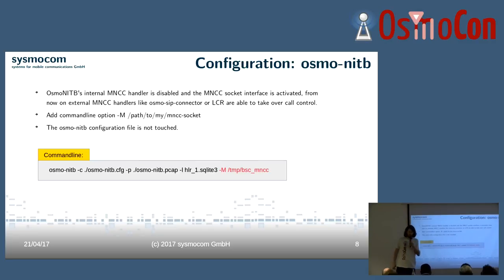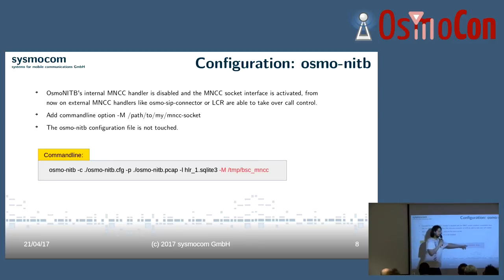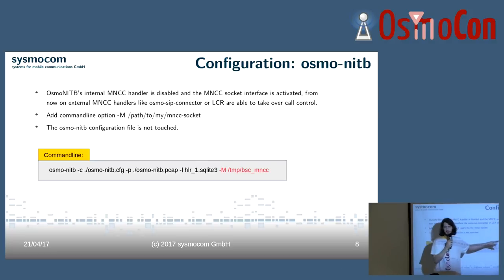Let's have a look at the configuration — it's very simple. The first thing you have to do on the OsmoNITB side is to disable the internal call control and hand all things over to the osmo-sip-connector. Here I have a sample command line — you pass the config file, which I don't touch by the way, so the config file of OsmoNITB completely remains untouched. It's really just this command line switch: capital M. You can also use lowercase m, but that's deprecated. With capital M you pass the path to your Unix domain socket, which is the interface between the osmo-sip-connector.